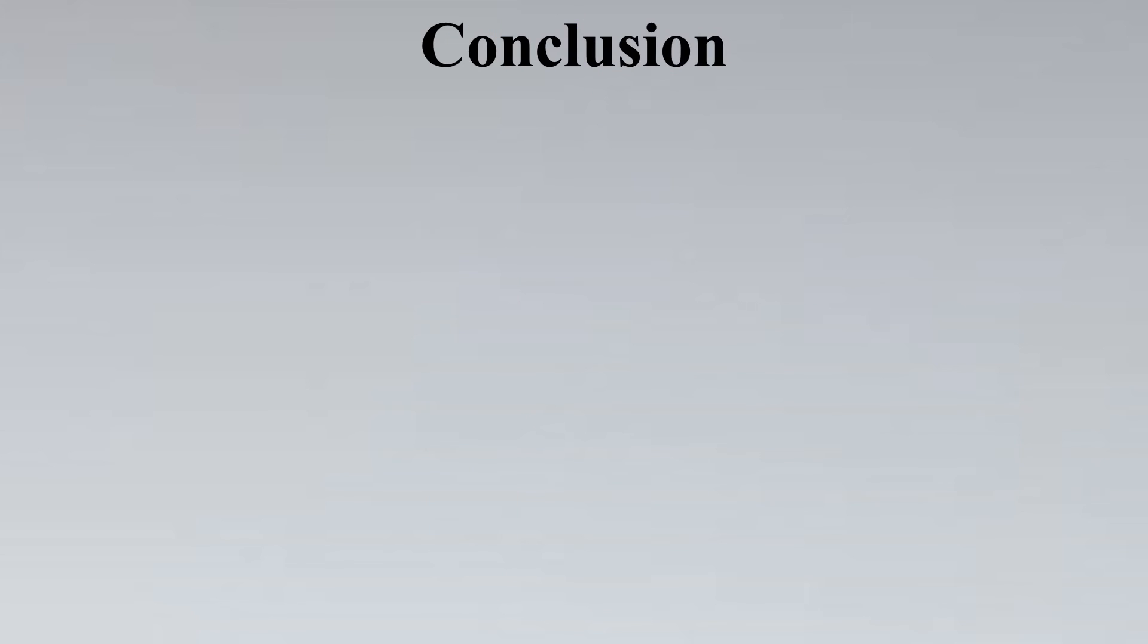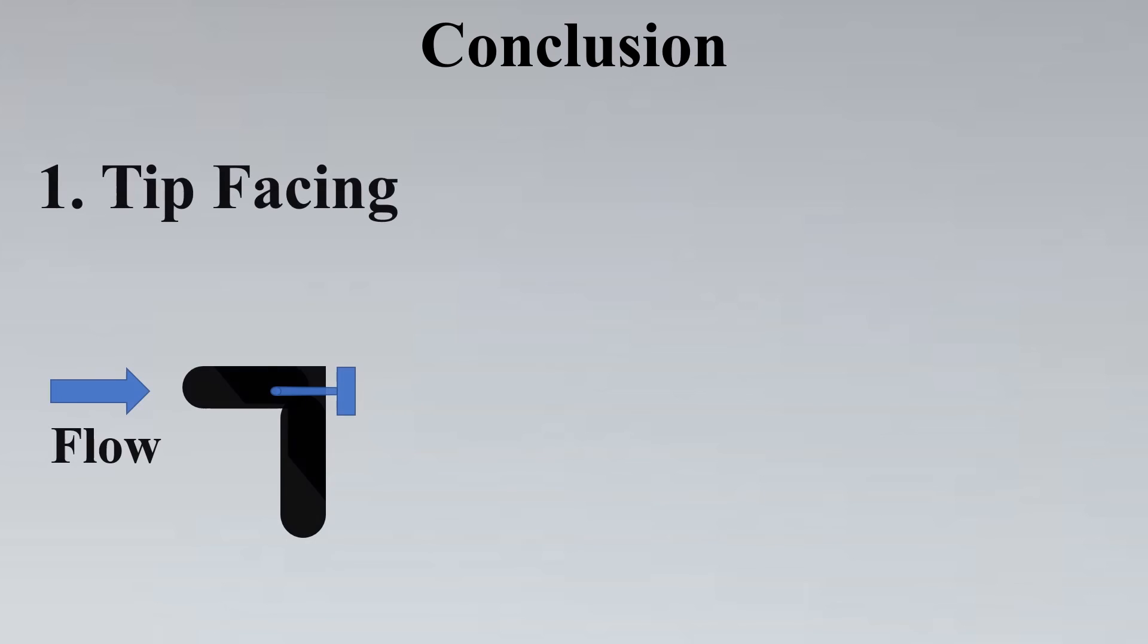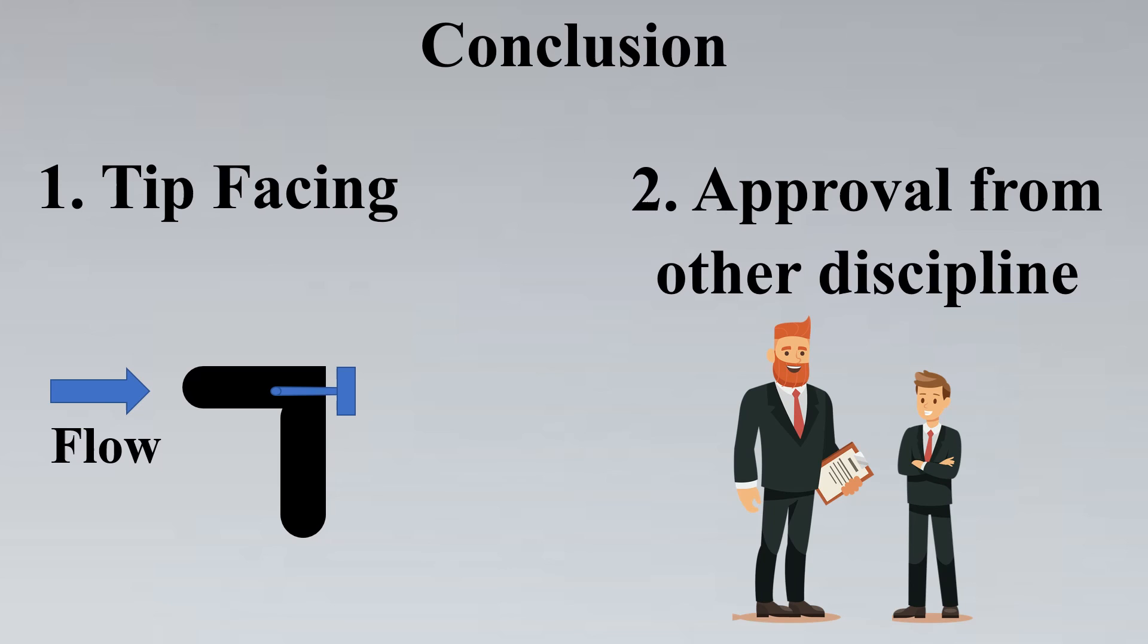Now let's quickly revise the concepts that we have learnt here. The first criteria was the tip facing towards the flow so if the tip is facing towards the flow then we are good to go. So less area is exposed, less chances of vortex and vortices and less chances of the thermowell being exposed to such high vibrations. The second one was approval from other disciplines where we saw that the process had oil and water and we had to measure the temperature of oil. So we had to see exactly where the tapping is possible or feasible for other departments.